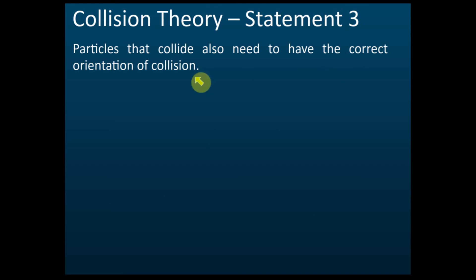Statement three says that particles that collide also need to have the correct orientation of collision. Statement one says they must collide, statement two says they must achieve a certain minimum energy called activation energy, and now statement three says that colliding with sufficient energy is also not enough — it does not guarantee the reaction can occur. Even if the energy is very high, it does not guarantee a reaction because the orientation of the collision must also be correct.